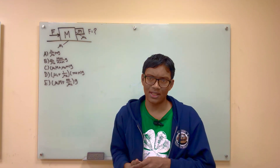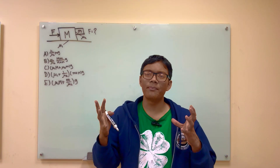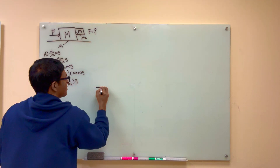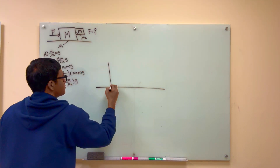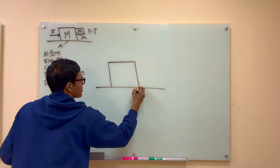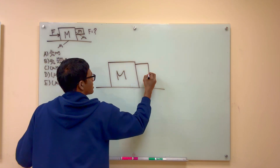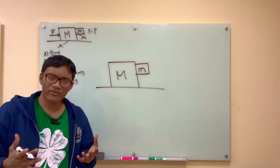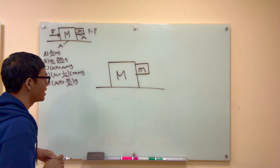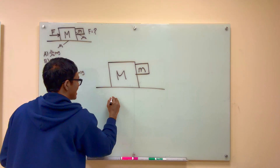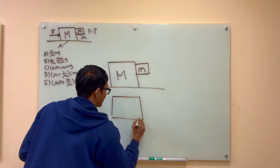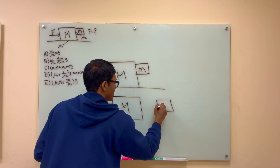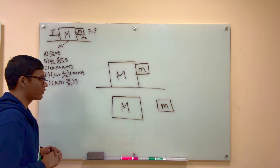As always, the first order of business is to draw a big diagram — a good picture. So let me draw a picture over here. Here is our large mass, capital M, and here is our smaller mass, lowercase m. Let's go ahead and draw some of the forces acting on these objects. Let me first draw them separately — their free body diagrams separately. Here is the large mass and here is the smaller mass, and let's draw all the forces acting on them.